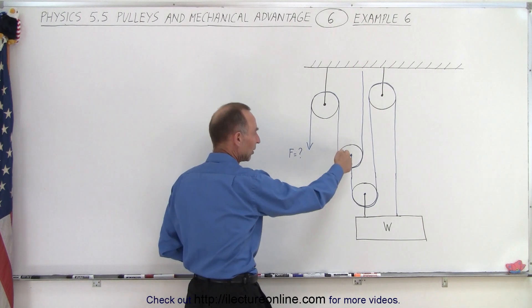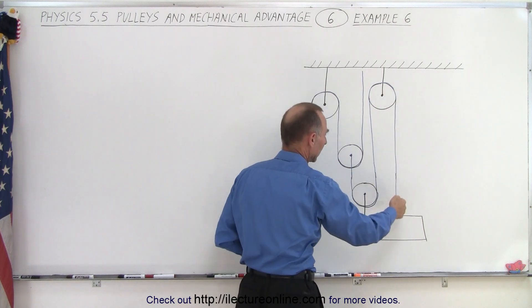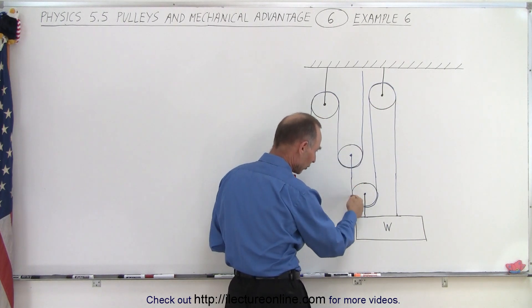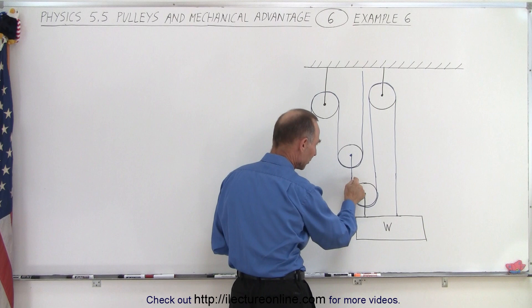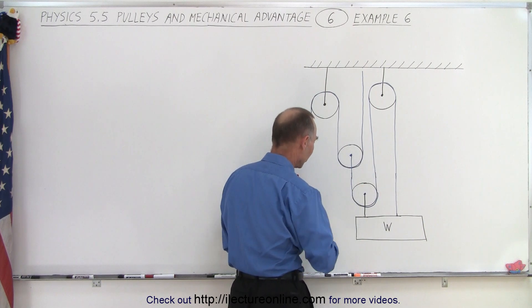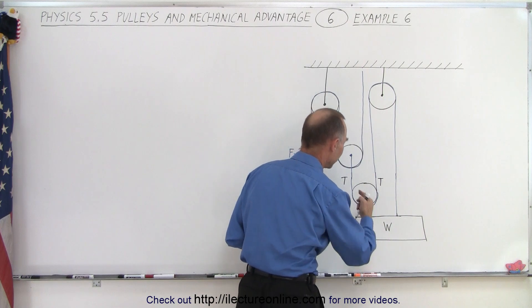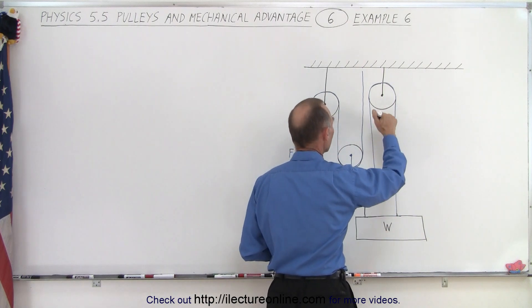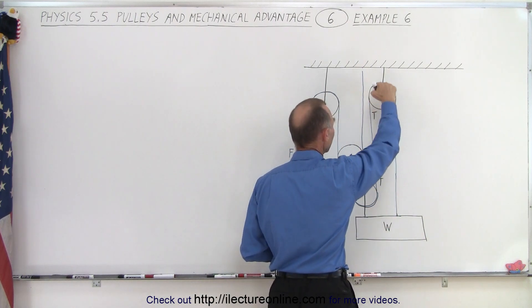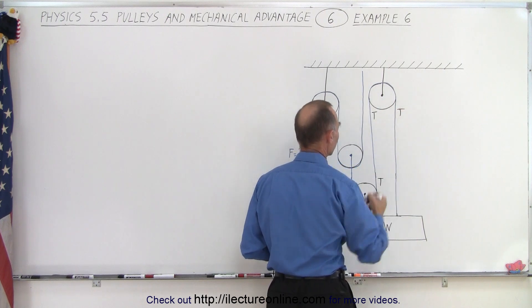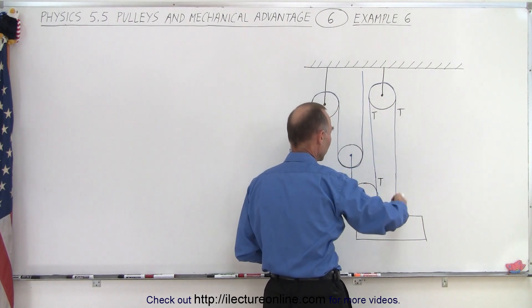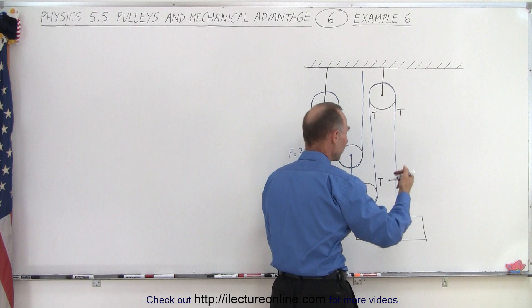So we're going to start with this string right here, and notice that since it goes around this pulley right here, it must have the same tension on both sides. So we can say the tension on this side must equal the tension on that side, and since this continues on over here, the tension here must be the same, and around this pulley must be the same on the other side. So we've determined that the tension on this whole string everywhere must equal T.